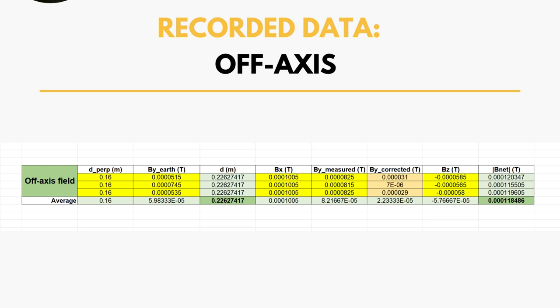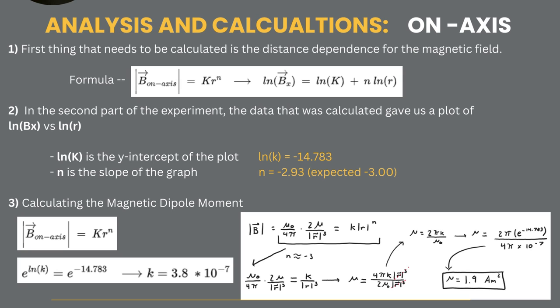Now the analysis and calculations: B on-axis can also be rewritten as kr to the power of n, and then this can also be rewritten as ln of Bx equals ln of k plus n ln of r.